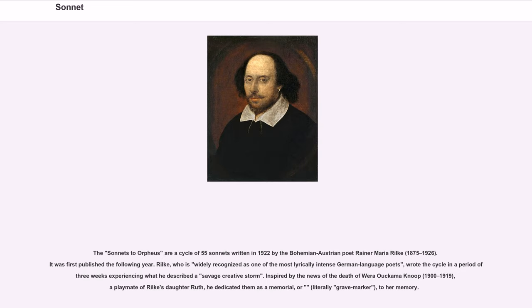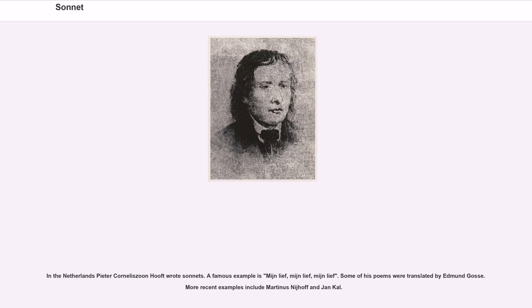Inspired by the news of the death of Wera Ouckama Knoop (1900–1919), a playmate of Rilke's daughter Ruth, he dedicated them as a memorial, or literally grave marker, to her memory. In the Netherlands, Pieter Corneliszoon Hooft wrote sonnets; a famous example is Mijnlief, Mijnlief, Mijnlief. Some of his poems were translated by Edmund Gosse.